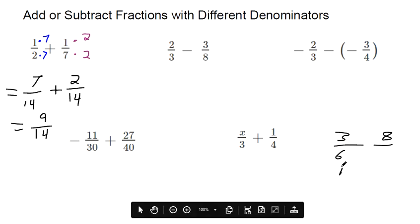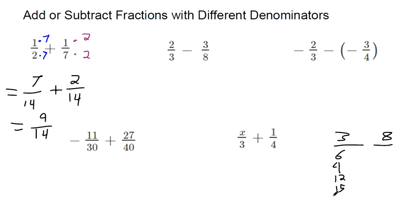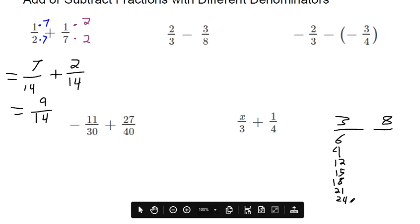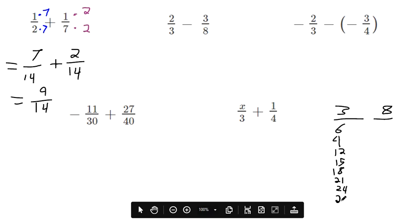3 plus 3 makes 6, 9, 12, 15, 18, 21, 24, 27. We could keep going, but let's stop there. Do the same thing with 8. 8 plus 8 makes 16, plus another 8 makes 24. And we can actually stop because now we have something in common.